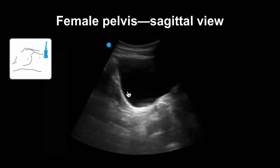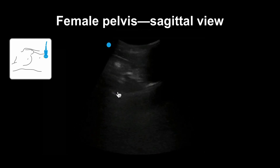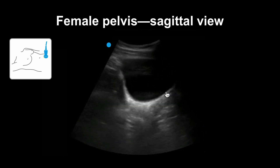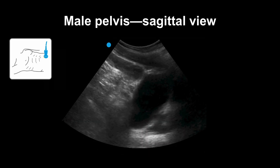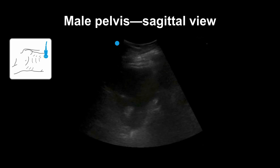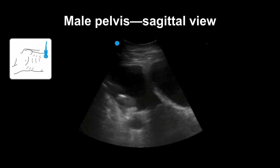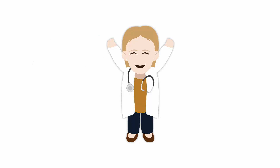Sometimes you can see fluid posterior to the uterus — this can sometimes be physiologic. However, if you ever see fluid between the uterus and the bladder, you should be concerned that there is something pathological occurring. Moving on to the male pelvis, this is what a typical normal sagittal bladder looks like, typically like a rounded triangle. Here is what free fluid looks like in the sagittal male pelvis — fluid tends to collect either posterior behind or superior to the bladder. You now have a good understanding of what fluid looks like in the abdomen and how the important structures of the abdomen look on ultrasound, which is important information when performing an ultrasound-guided paracentesis.